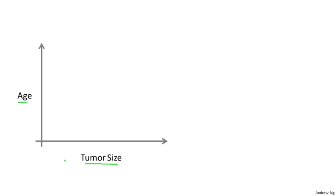In other machine learning problems, we may have more than one feature or more than one attribute. Here's an example. Let's say that instead of just knowing the tumor size, we know both the age of the patient and the tumor size.